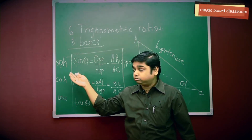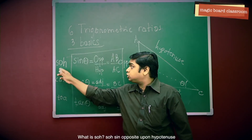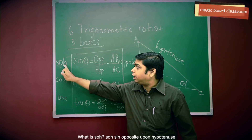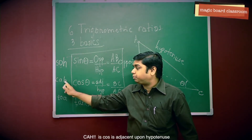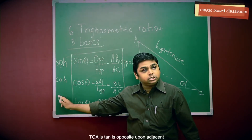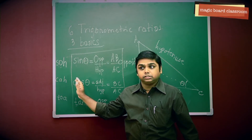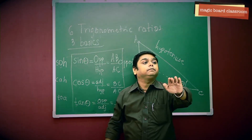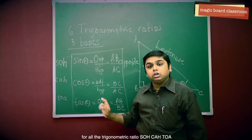SOHCAHTOA. What is SOH? SOH is sine equals opposite upon hypotenuse. CAH is cosine equals adjacent upon hypotenuse. TOA is tangent equals opposite upon adjacent. This is our baseline for all the trigonometric ratios — SOHCAHTOA.